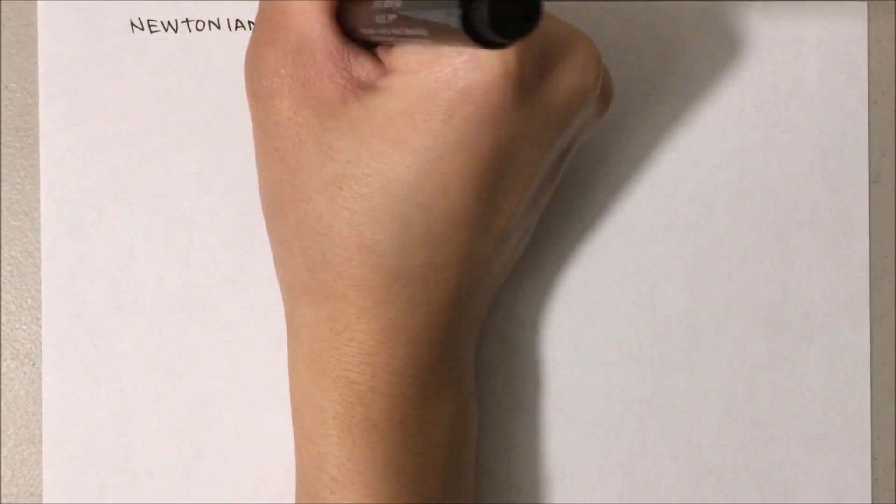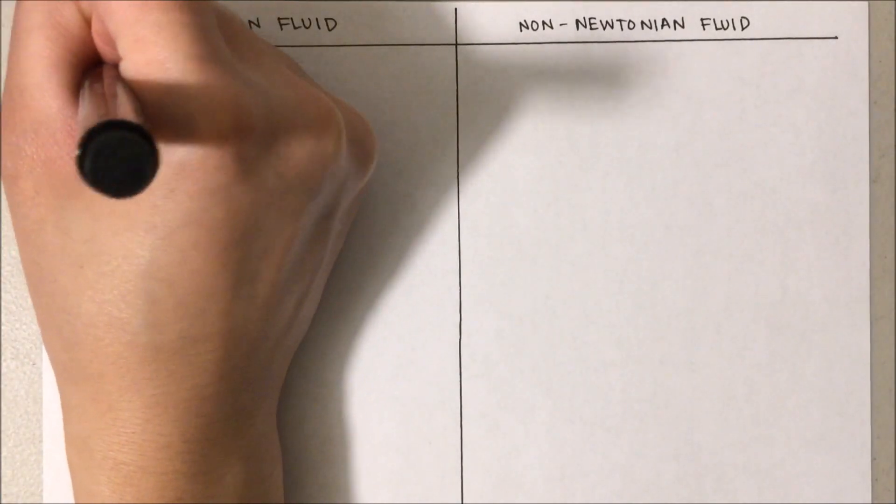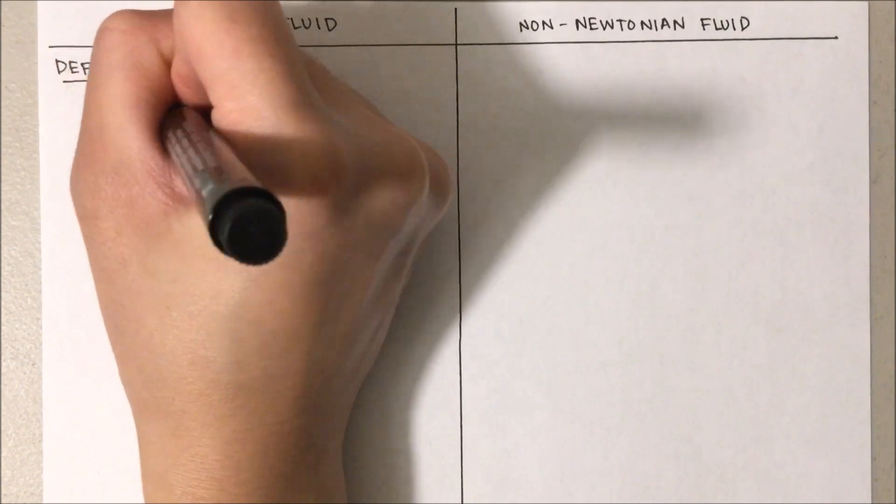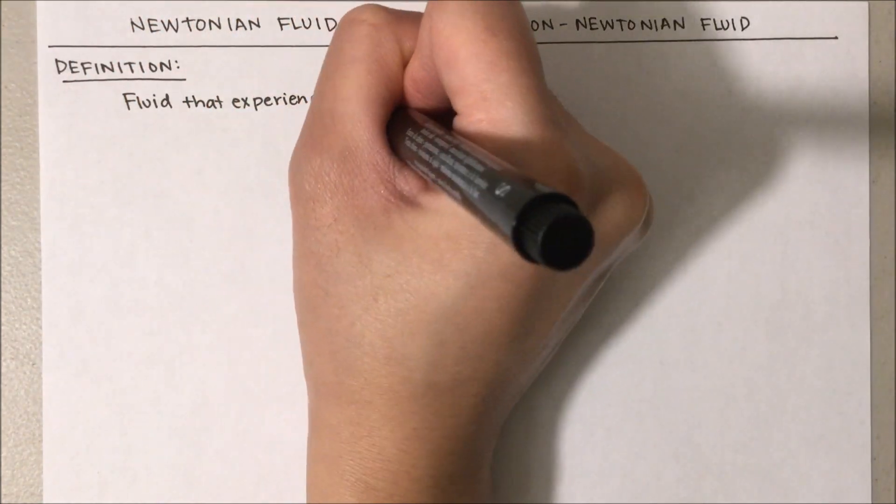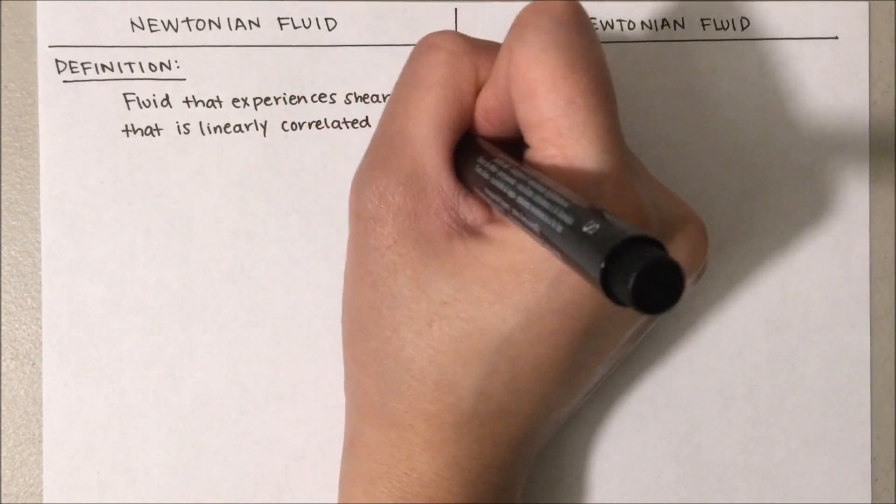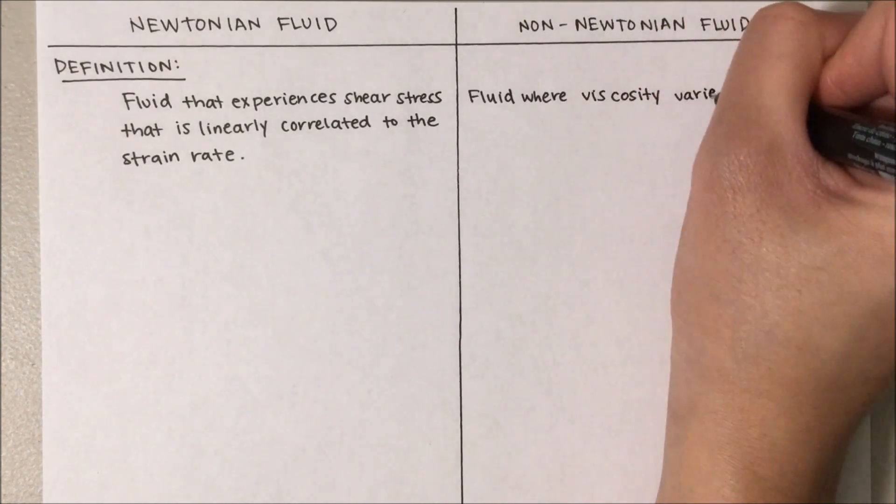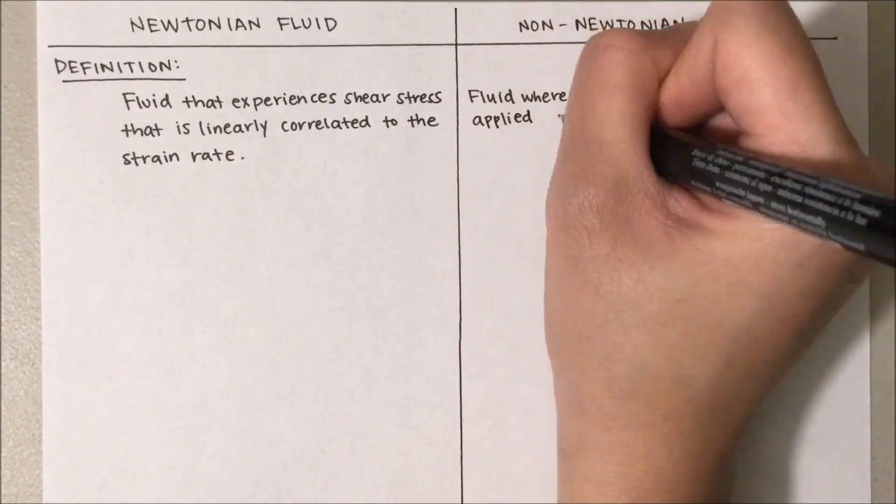The difference comes down to Newtonian and non-Newtonian fluids, where water is a Newtonian fluid and the ketchup and cornstarch with water are non-Newtonian fluids. A Newtonian fluid is a fluid that experiences shear stress that is linearly correlated to the strain rate. A non-Newtonian fluid is a fluid where the viscosity varies based on applied stresses.